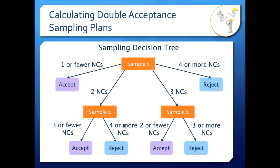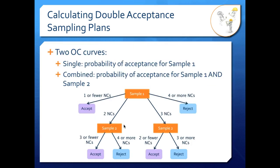We've got our tree and we can feed this information into the calculations of our OC curves. Our single acceptance curve is calculated using the accept and reject information from sample one. Our combined curve uses all the information in the tree. It is so important to draw out your tree before you start any calculations — you'll get really tangled up if you don't, because it looks different for different problems.